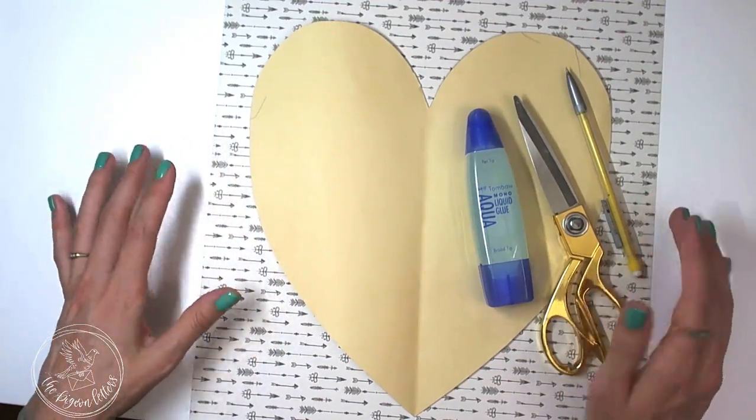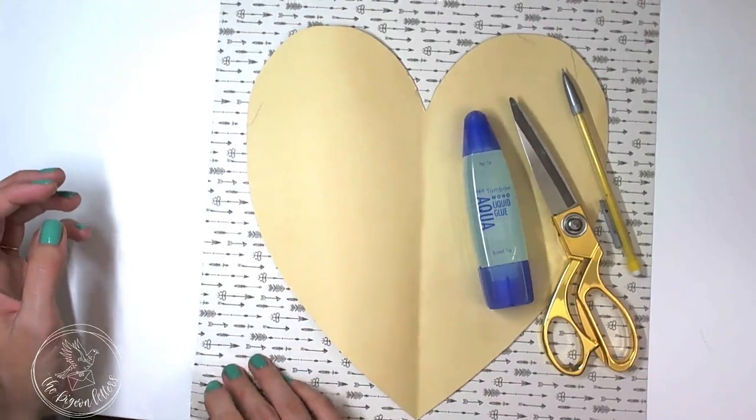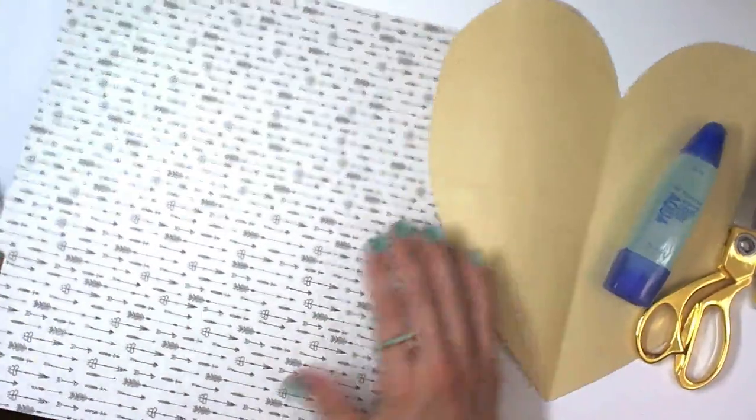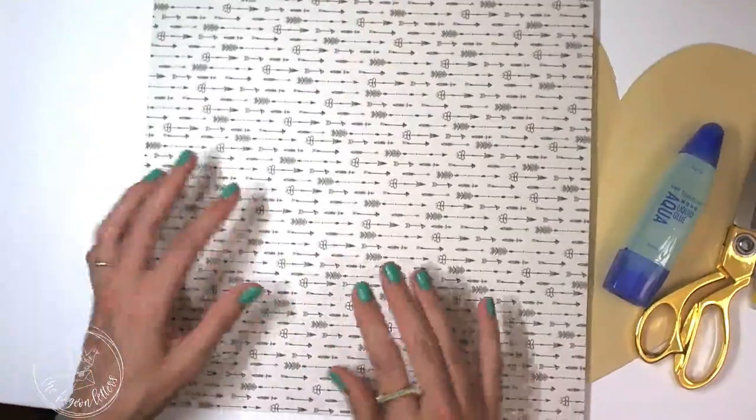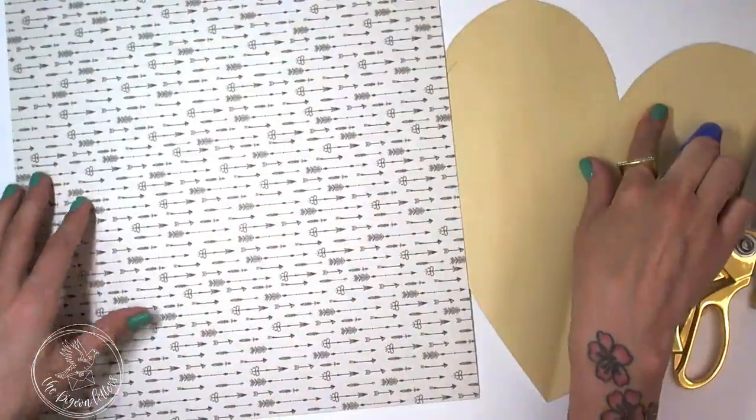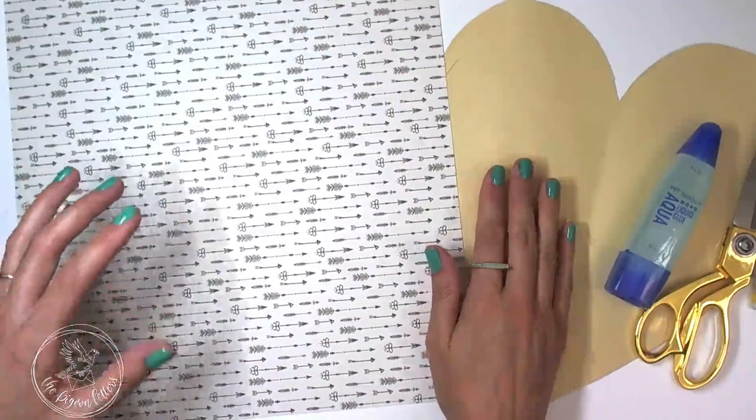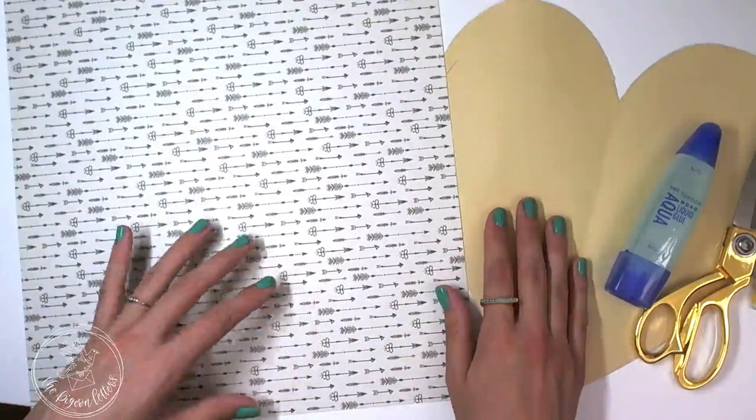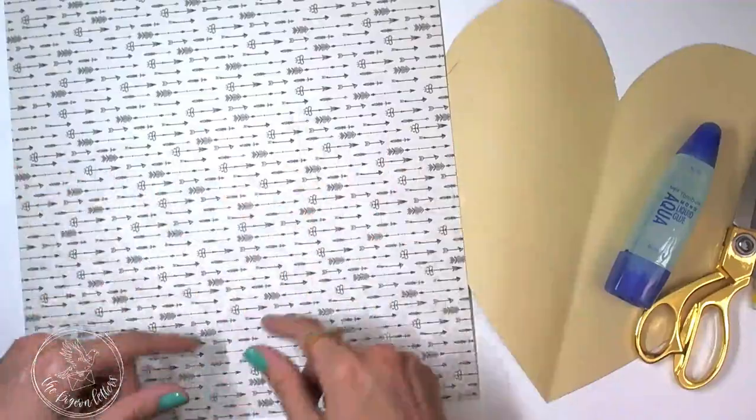So what you need to get started is a piece of cardstock, and I use double-sided patterned cardstock so the inside is just as exciting as the outside. You don't have to have a heart template. I just have this because I've done a bunch of these and that way I can reference it and just use that so I know that my heart's perfect.